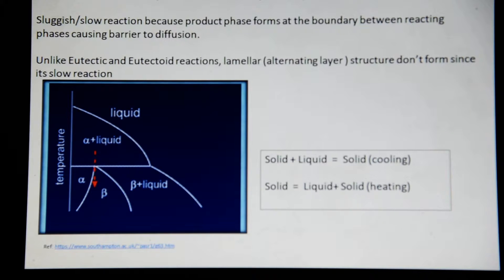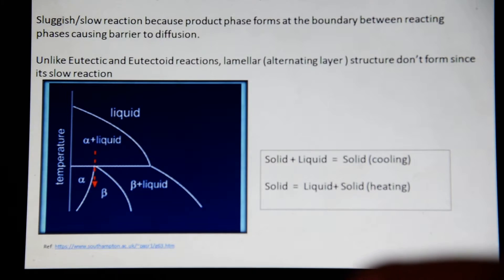In a eutectic transformation, you have liquid cooling down directly into a two-phase solid solution, but in the case of a eutectoid reaction, you have a solid which cools down into two solids. But in the case of the peritectic reaction, you have the alpha plus liquid cooling down directly into the beta phase.